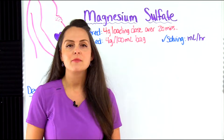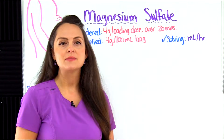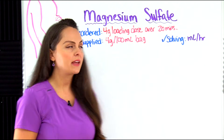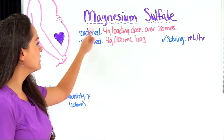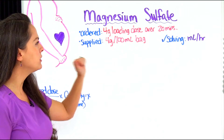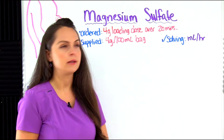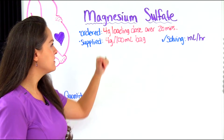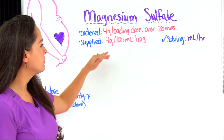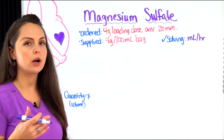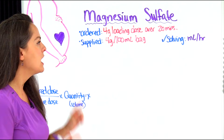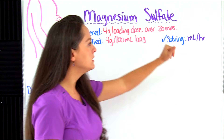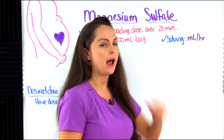This problem says we have a patient with eclampsia and they've been ordered IV magnesium sulfate. The healthcare provider has ordered a four gram loading dose to be infused over 20 minutes. You're supplied with a bag of IV magnesium sulfate that reads four grams per 100 mL, and what you need to determine is the infusion rate — the milliliters per hour.